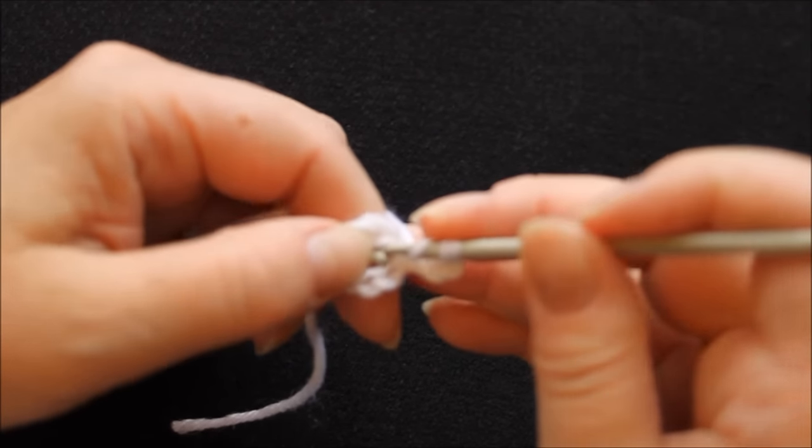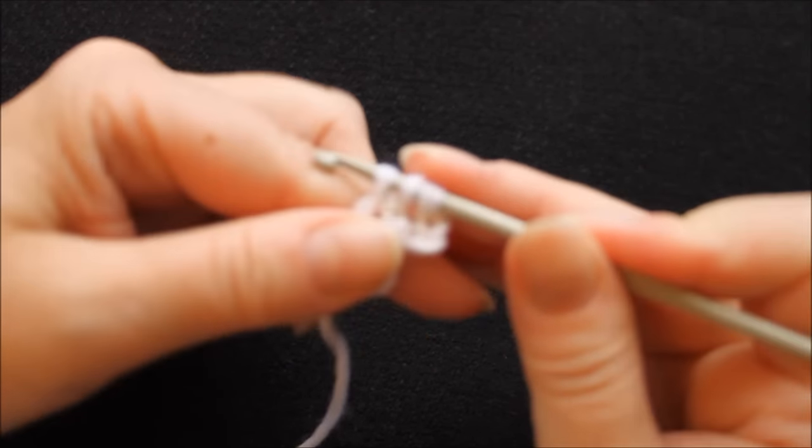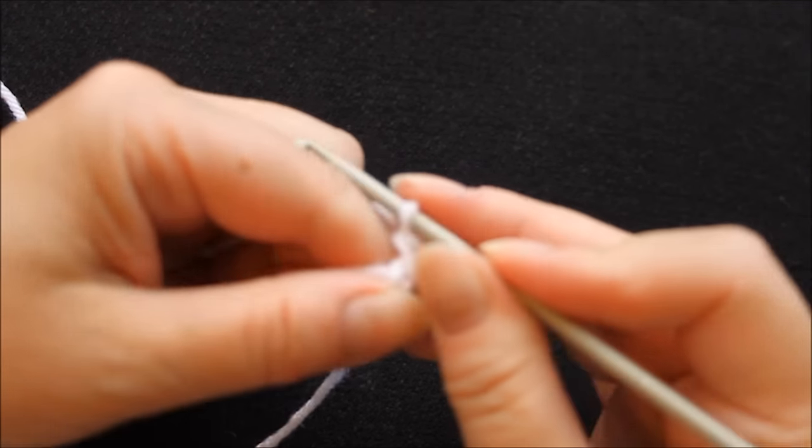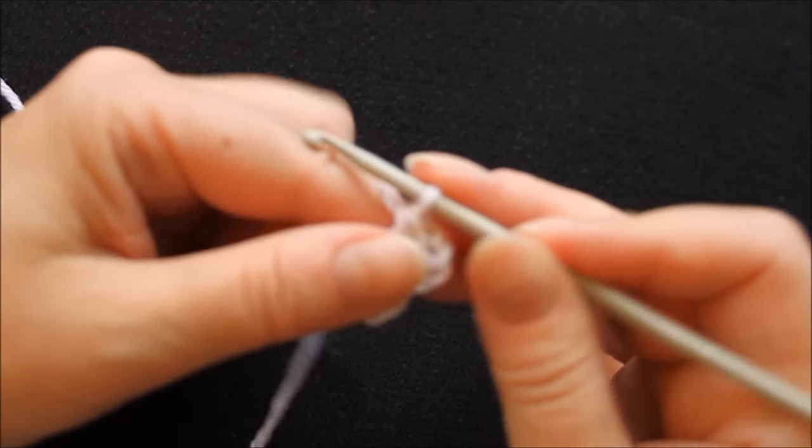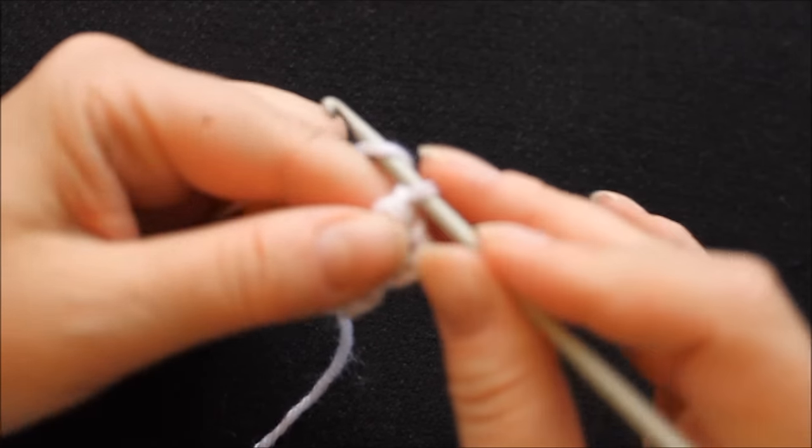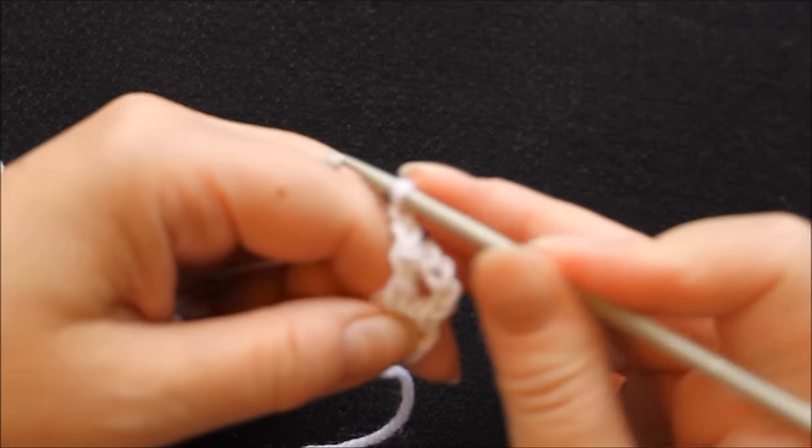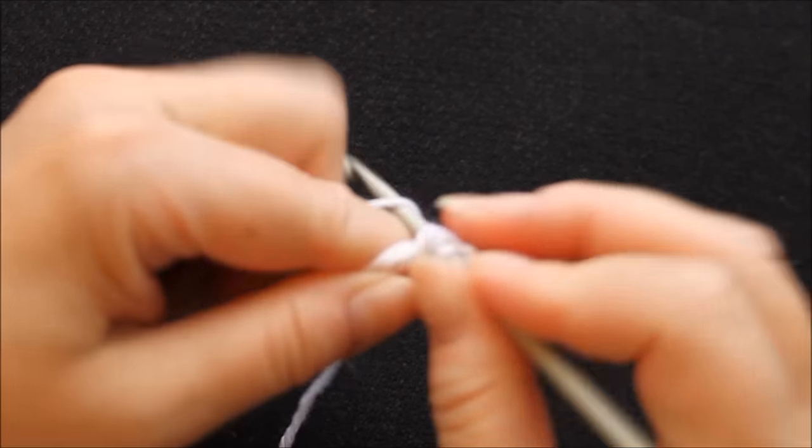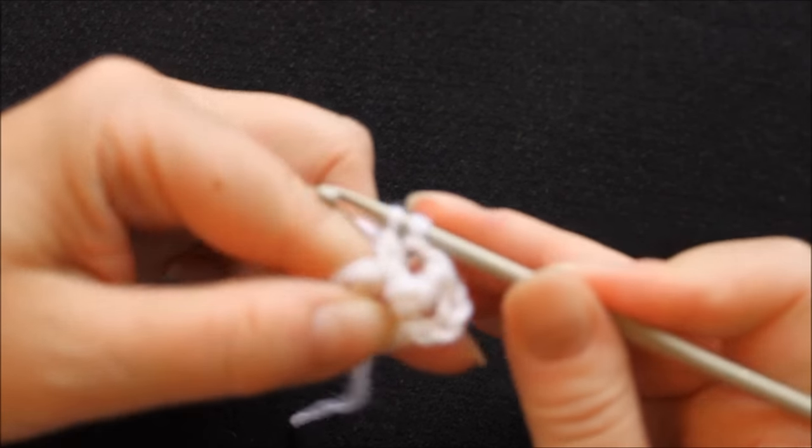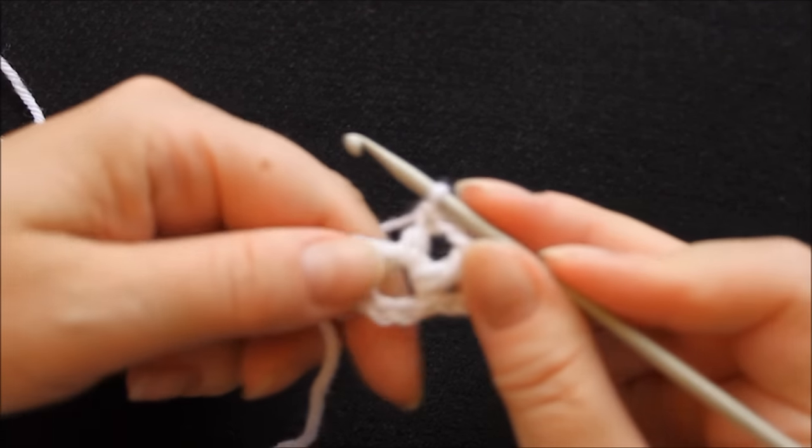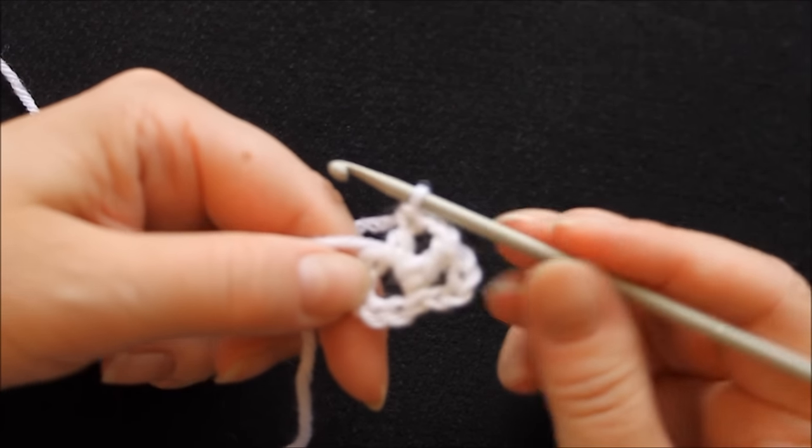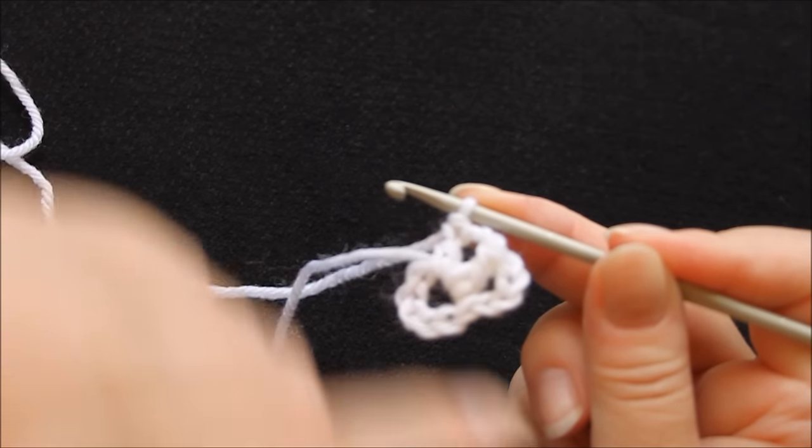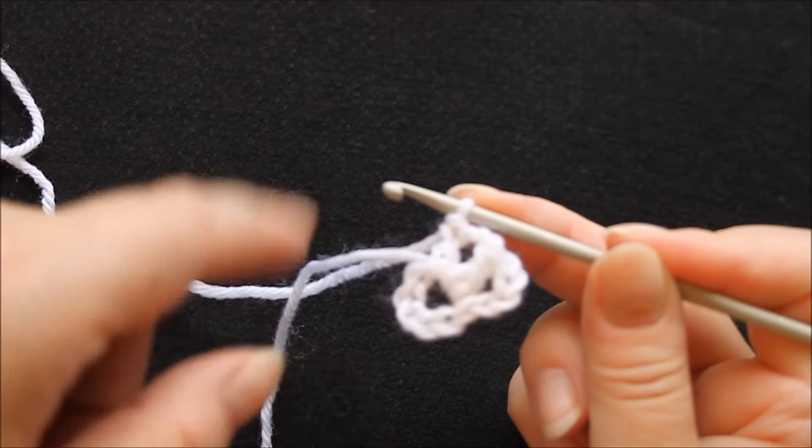And treble into the ring and chain two, and again a treble into the ring and so on. So you keep going just like this until you have altogether 12 of these counting the starting chain here, so 12 altogether.